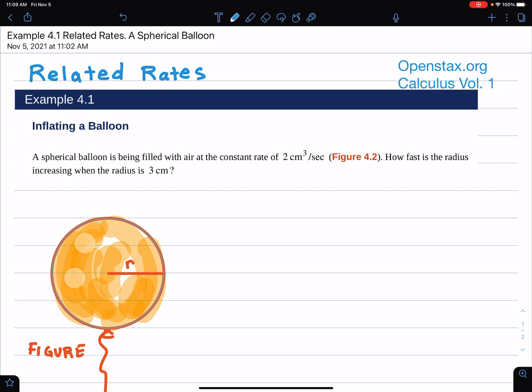You see this in other major textbooks. What you have here is a balloon which I've drawn myself. This spherical balloon is being inflated at a constant rate. A spherical balloon is being filled with air at a constant rate of 2 centimeters cubed per second. How fast is the radius increasing when the radius is 3 centimeters?